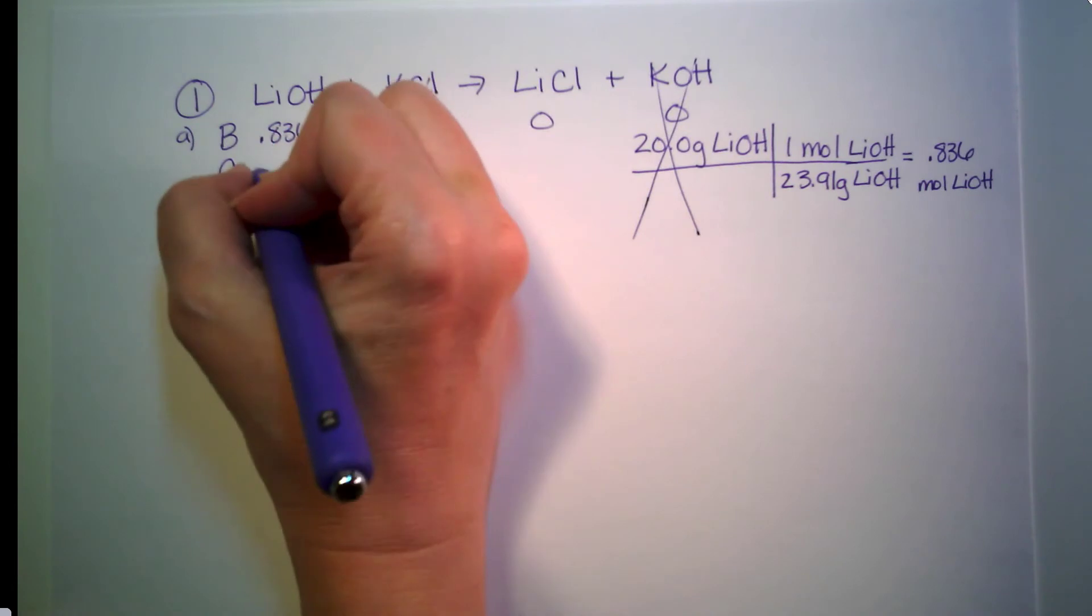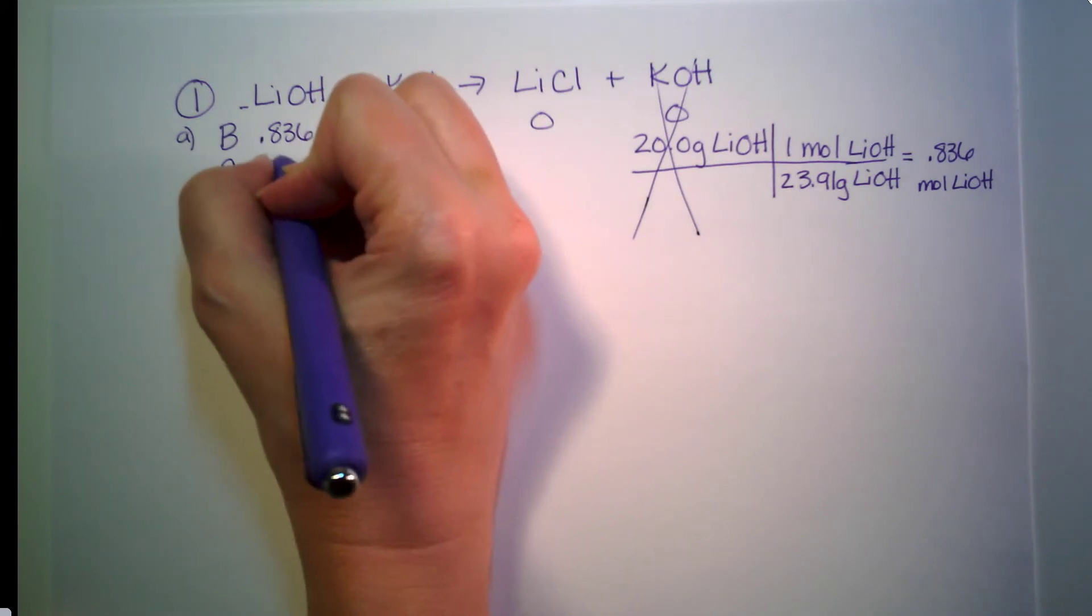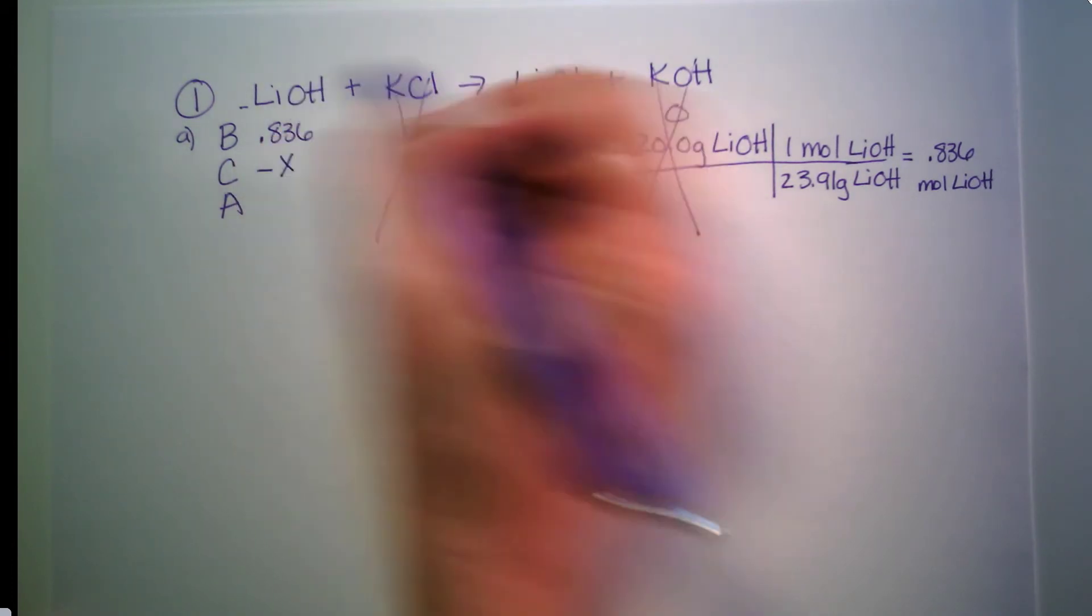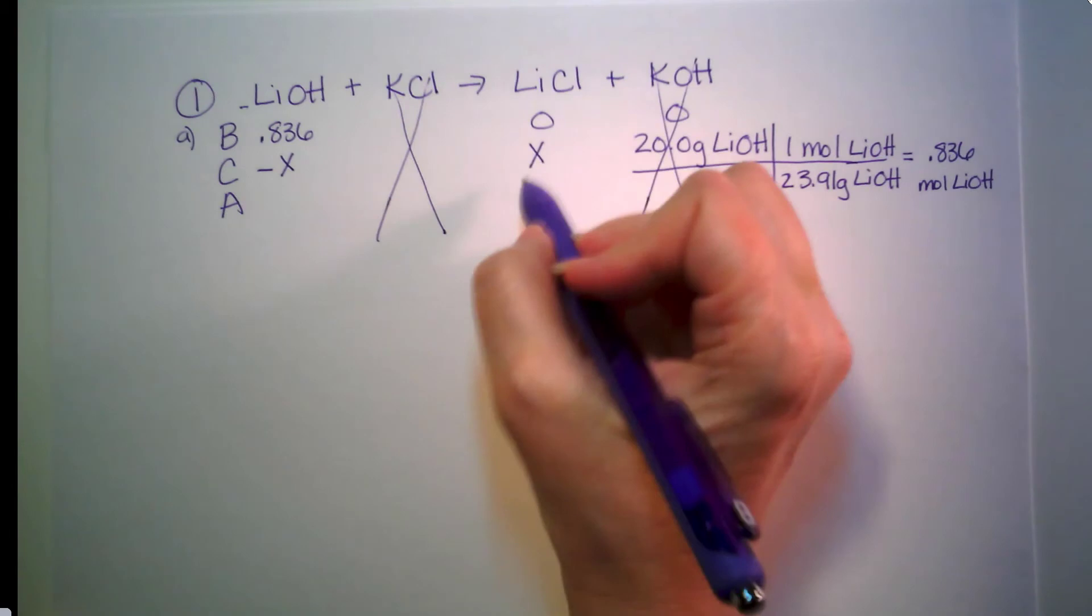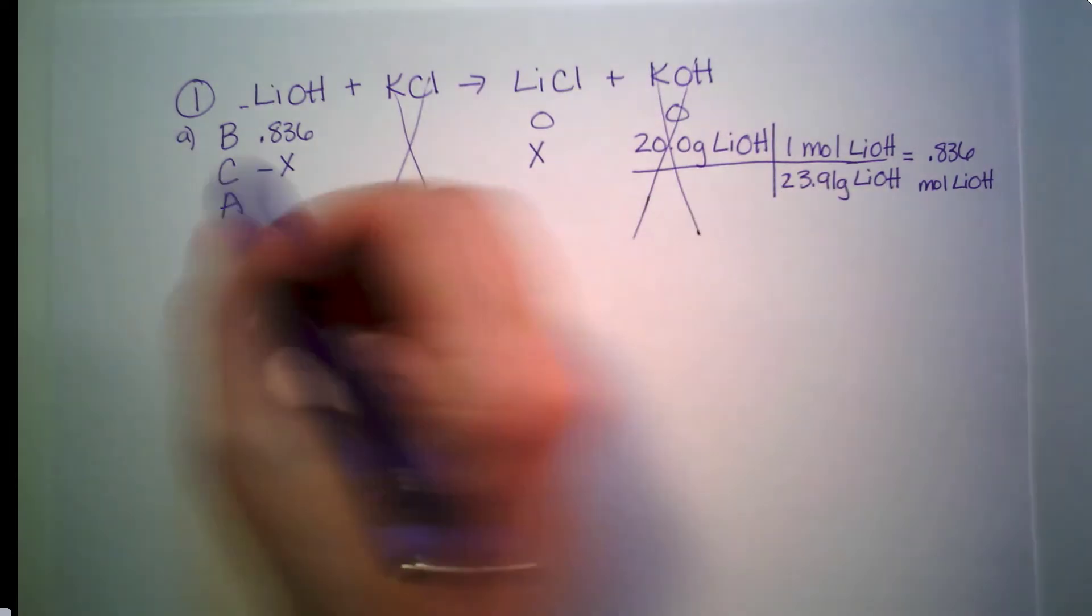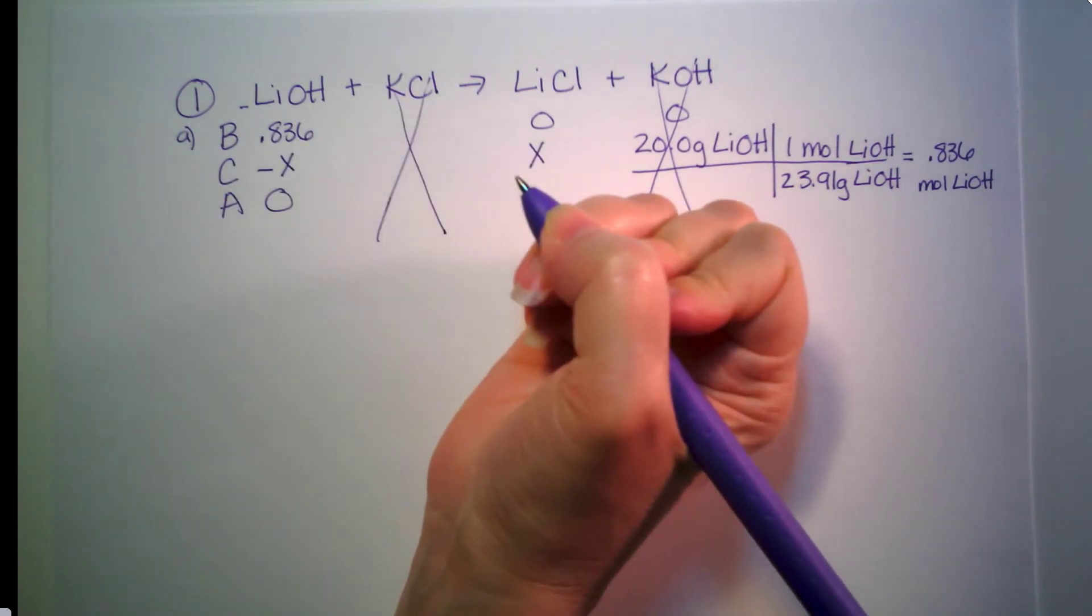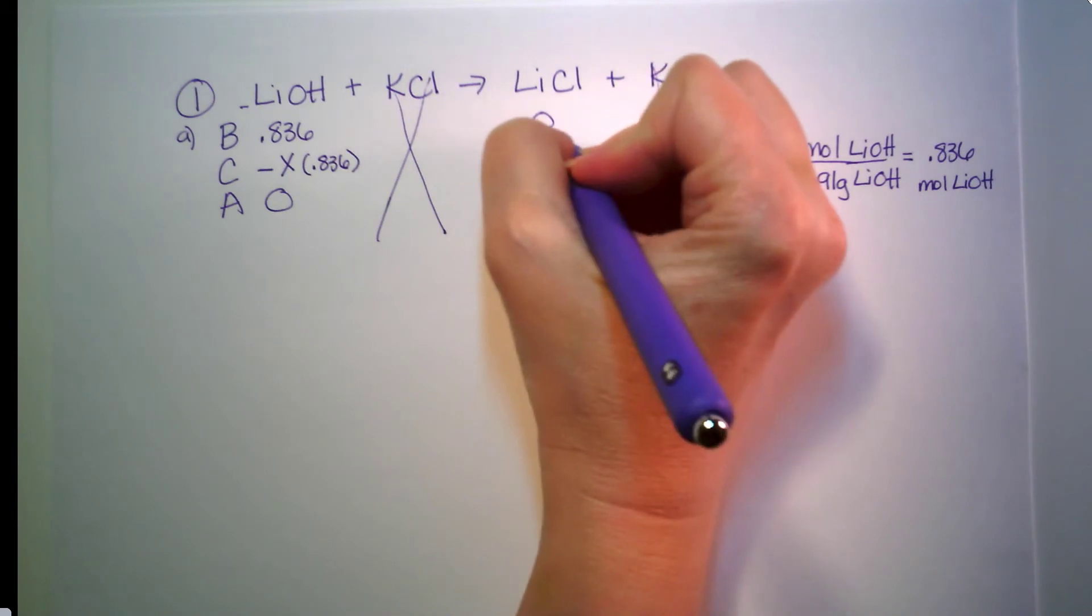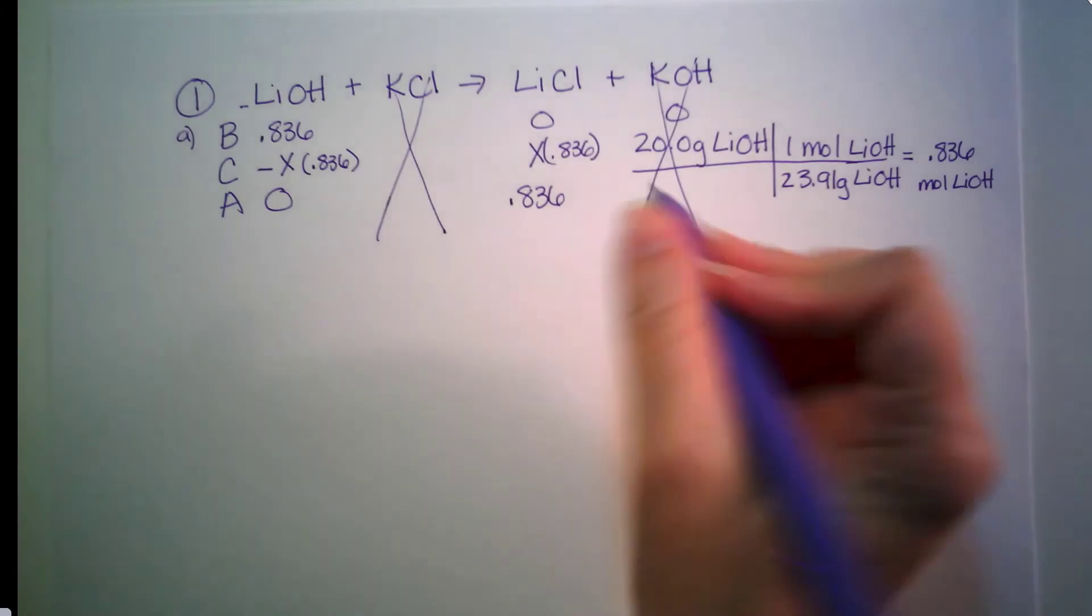The other thing we know is we know our molar ratio. There's an understood 1 right there, so this is going to be minus 1x, because we are going to be decreasing the amount of this as the reaction goes on. This one's going to be a positive x, because it is going to be going up as more and more is being made. So this one's pretty straightforward because we don't have anything to multiply. So if this is 100% used up, then this would go to zero, which means my x is 0.836, which I can plug into here.